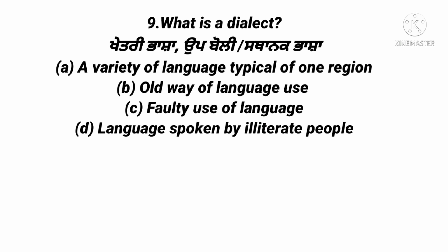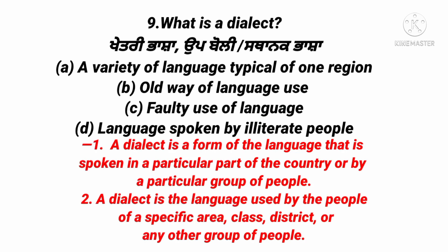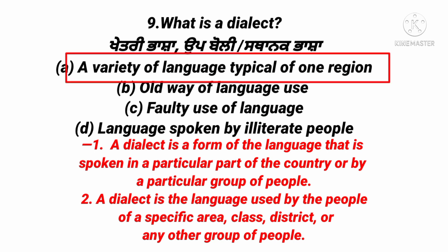The next question: What is a dialect? A dialect is a variety of language typical of one region — in Punjabi it is called 'khetrī bhāshā' or 'sthānak bhāshā.' A dialect is a form of language spoken in a particular part of a country or by a particular group of people. For example, people of Punjab speak Punjabi; similarly, English is spoken differently in different regions.